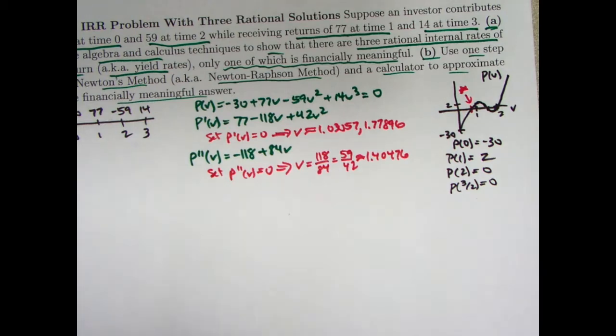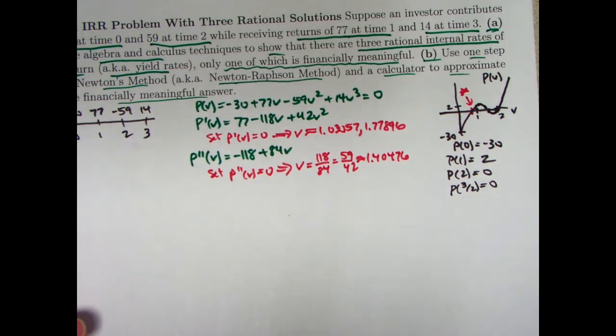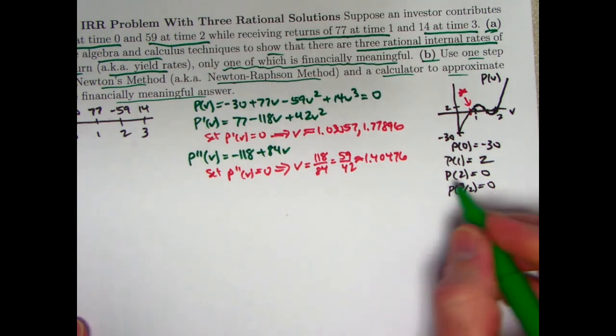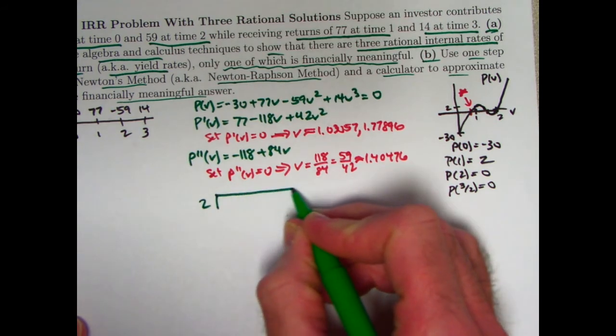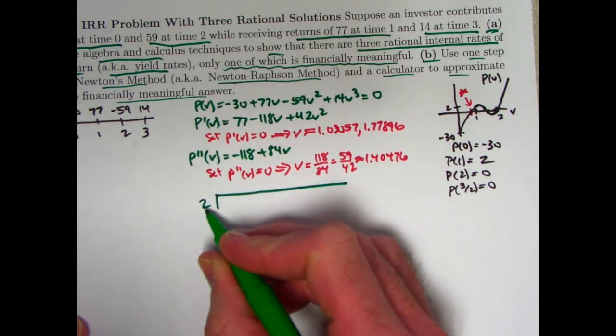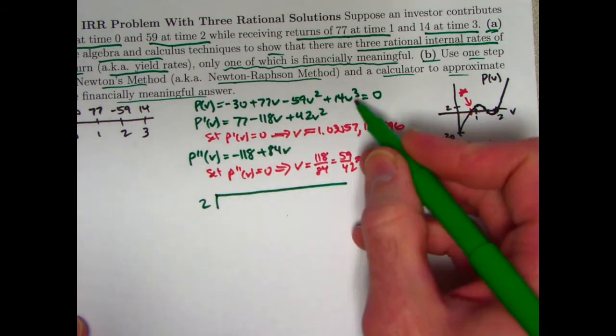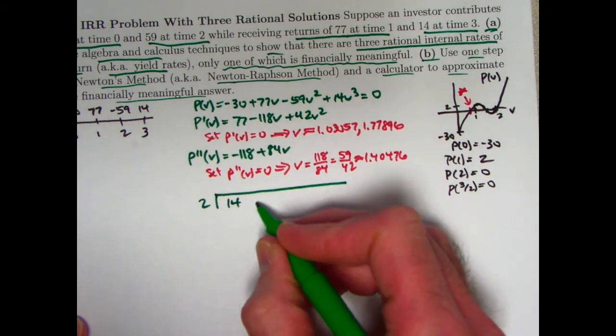There's an inflection point when v is about 1.4, right about there. It turns out p of three halves is also a zero. So v equals three halves is another discount factor version of the internal rate of return. Not going to be financially meaningful, but it will intersect there at three halves and come back and intersect again at two. This is the graph of p(v). We're using calculus to help us find that. You could certainly and probably should check that three halves is a root. Go ahead and plug three halves into there. It does turn out to be a rational root.